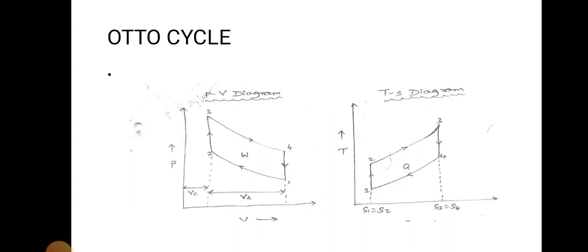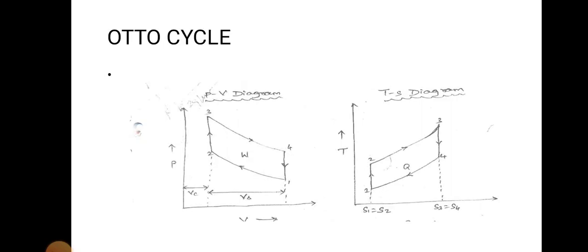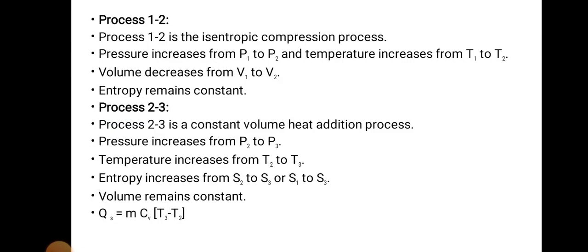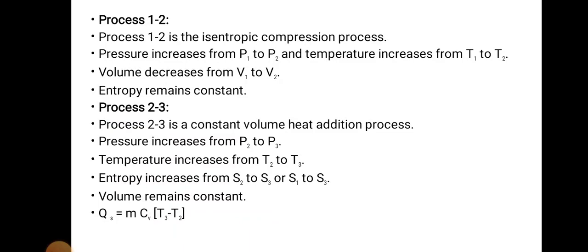In the Otto cycle PV diagram and TS diagram, process 1 to 2 is an isentropic compression process. Pressure increases from P1 to P2 and temperature increases from T1 to T2. At the same time, volume reduces. You can see in the PV chart: pressure increases from P1 to P2 and volume reduces. On the TS diagram, entropy remains constant: S1 equals S2.